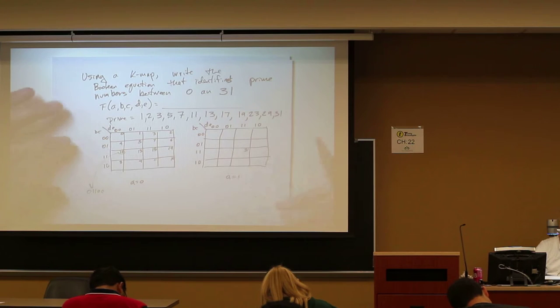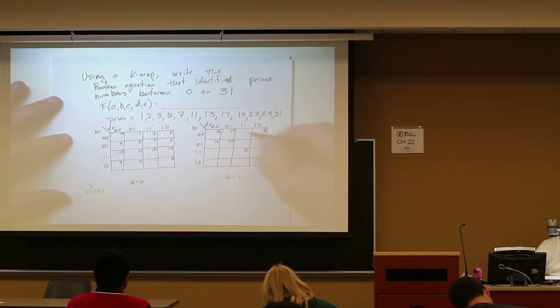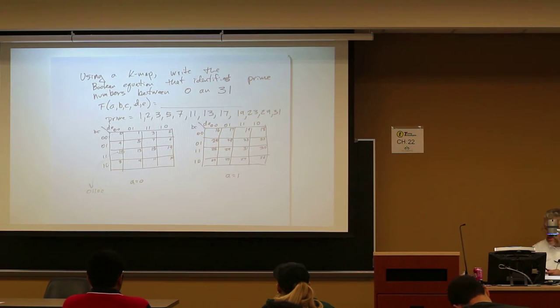So going over here, then we continue on. This is 16, 17, 18, 19, 20. Oops, hold it. 16, 17, 18, 19, 20, 21, 22, 23, 24, 25, 26, 27, 28, 29, 30, 31. And, again, if you don't believe that all of these are something, let's look at this one right here.